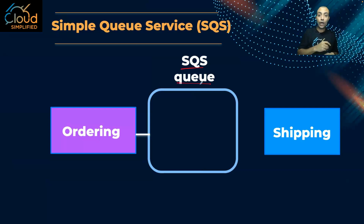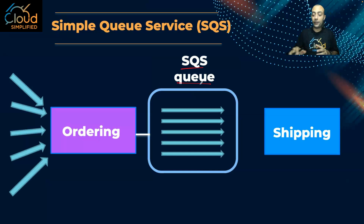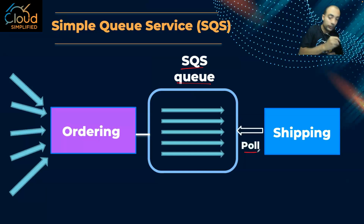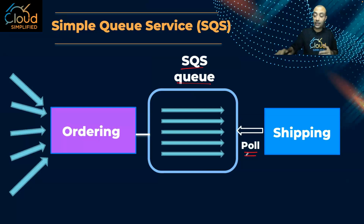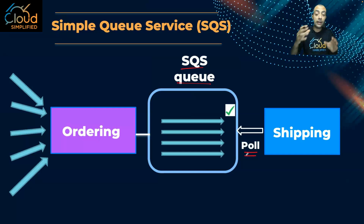The solution is to implement a queue in between these two components. Whenever a new user places an order, the order is placed in the queue. All orders accumulate in the queue, and the shipping application will poll — meaning it checks the queue for new orders to process. It works on the first order, prepares and delivers it, deletes it from the queue, then moves on to the next orders.